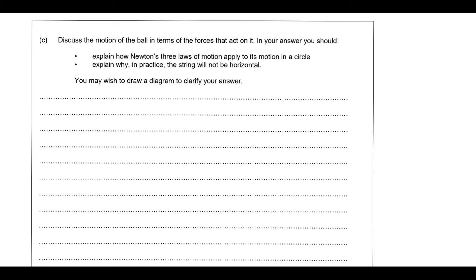The next question looks at how we can apply Newton's laws to explain what's happening for an object to move in circular motion. Let's first sketch a diagram: an object going around a circle with a force acting towards the centre, a tangential velocity v, and mass m. The first key thing to recognise is that as the object goes around the circle, the direction is always changing.